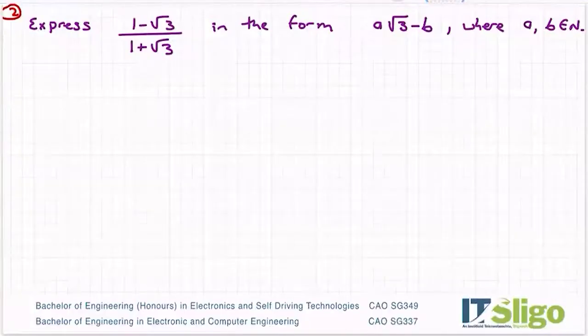Express 1 minus root 3 over 1 plus root 3 in the form a root 3 minus b, where a and b is an element of integers.